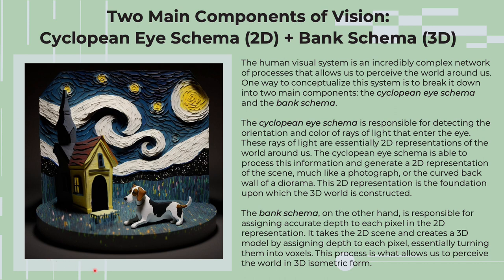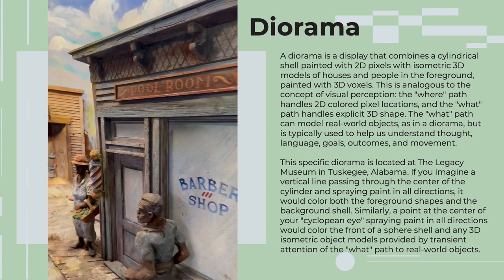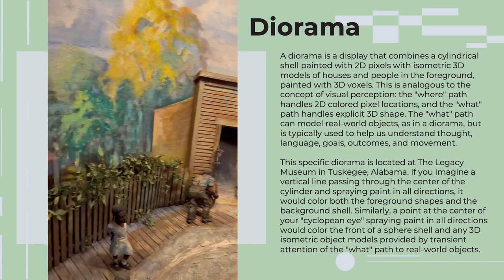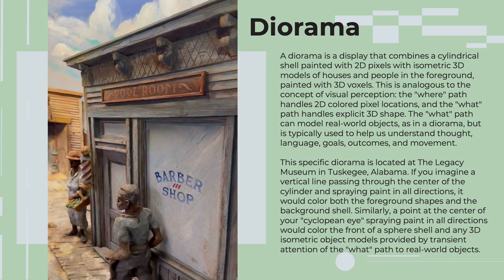A diorama is a very good way to conceptualize this: you have a back cylindrical 2D understanding of colors and pixels, but as you bring your ventral visual stream attention to something like the foreground, you can create an isometric model of that portion of your visual field. You convert pixels to voxels for the region you brought your attention to transiently. This video of a diorama at Legacy Museum in Tuskegee, Alabama gives an idea of the 2D background and the 3D isometric foreground.